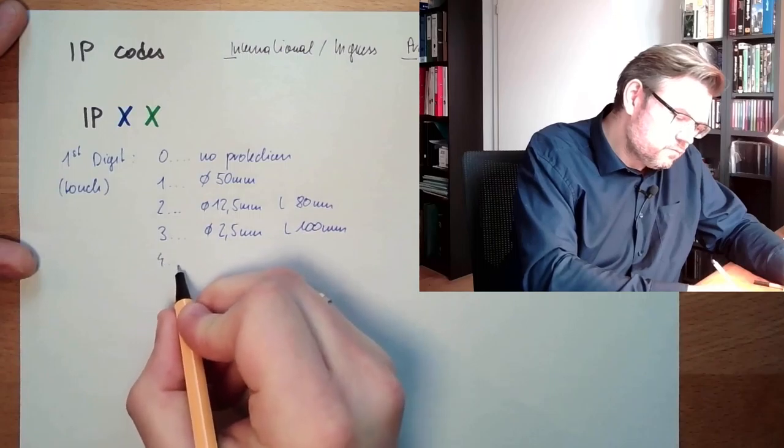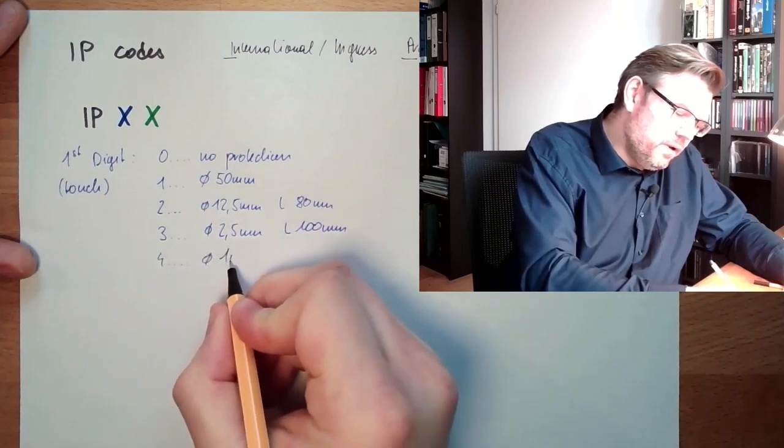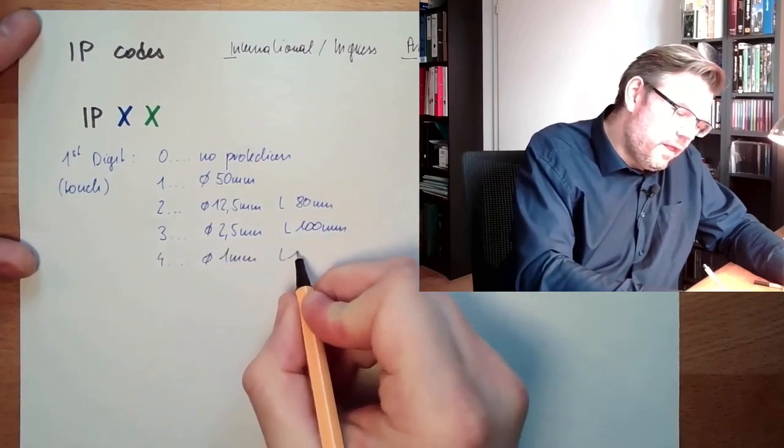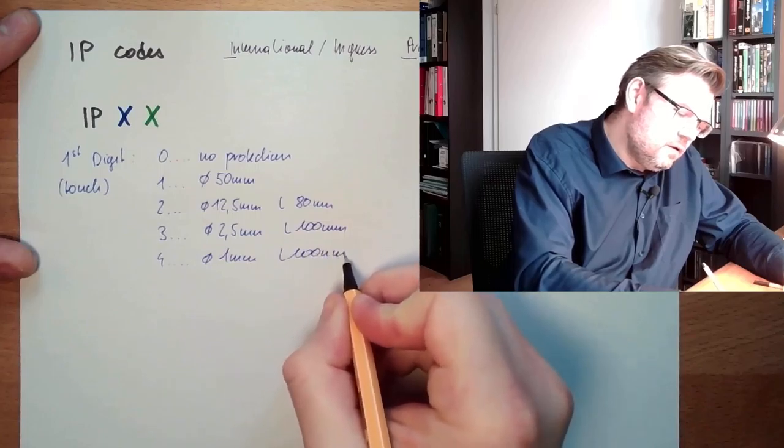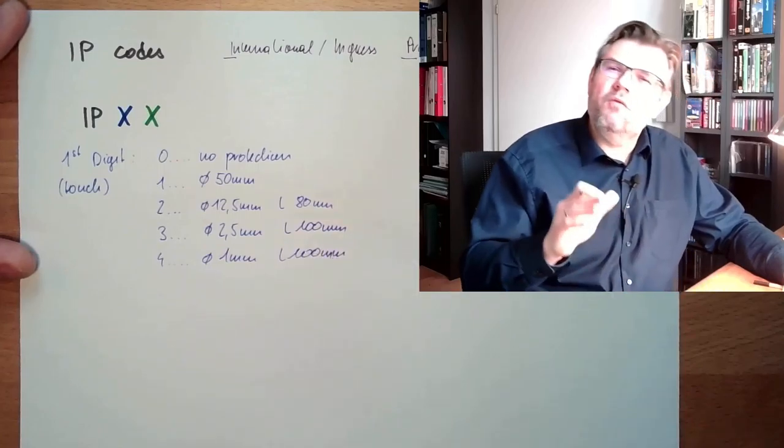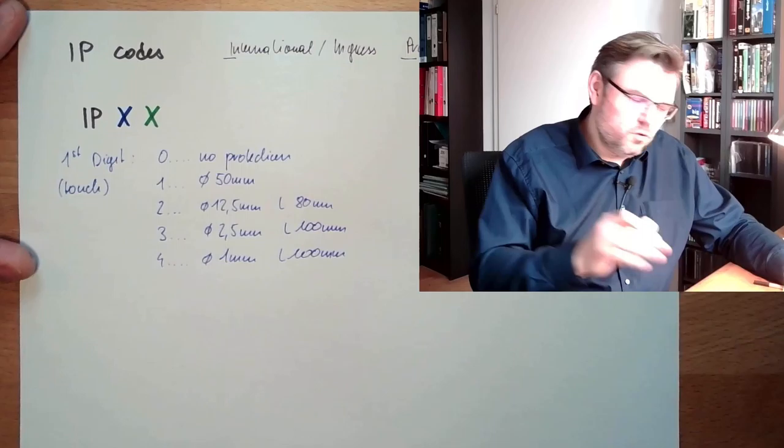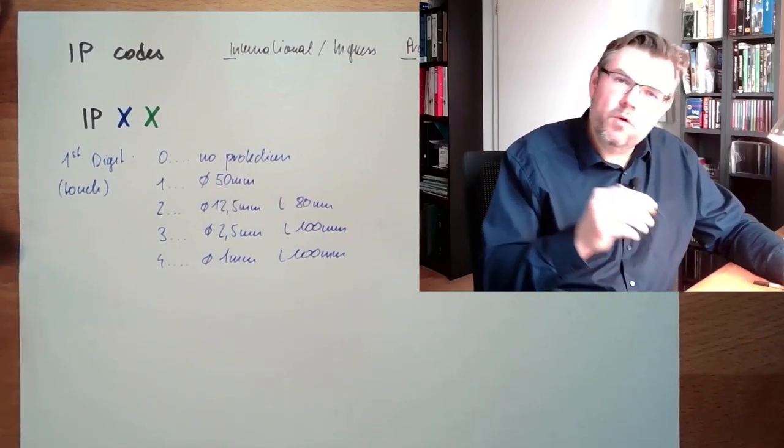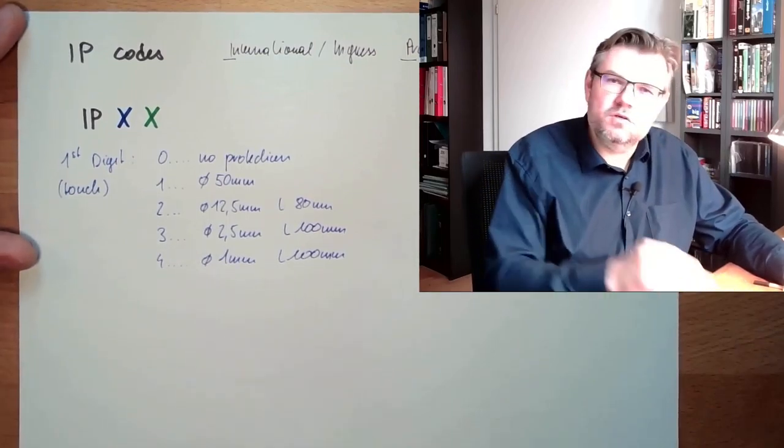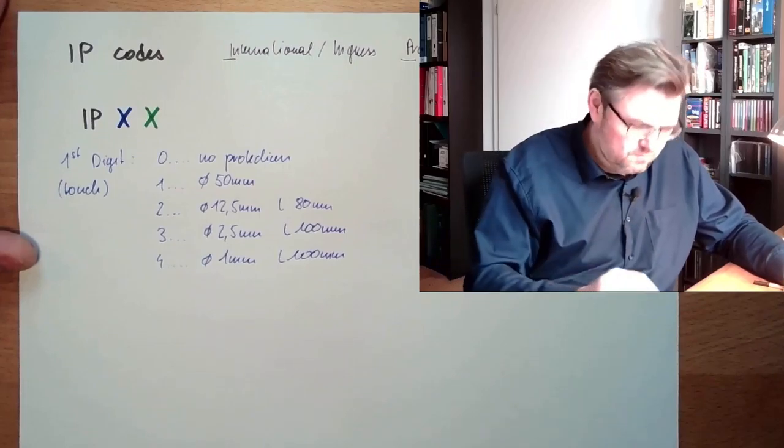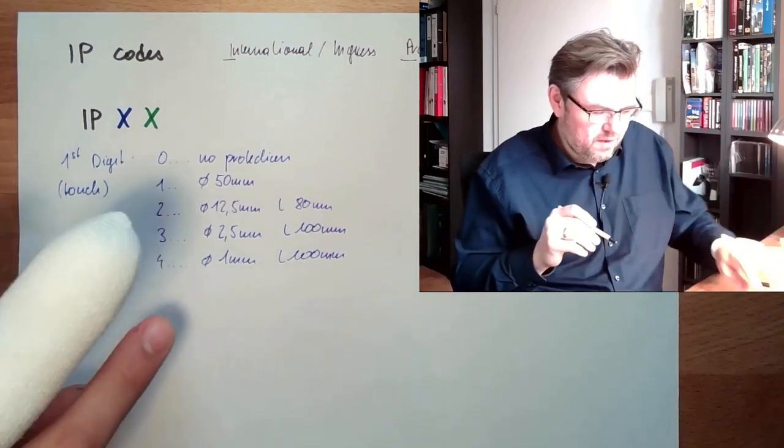4, 1 mm, length 100 mm. This is with a wire. So you're protected against touching the harmful thing with a wire. Of course, if you're using a long wire, it's a really tiny one.